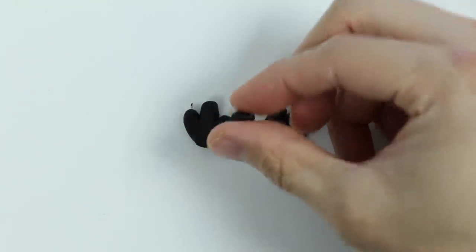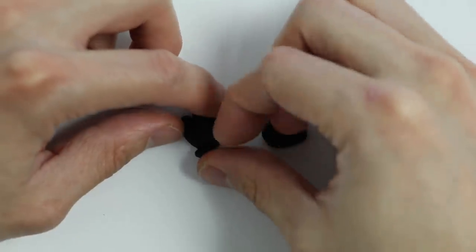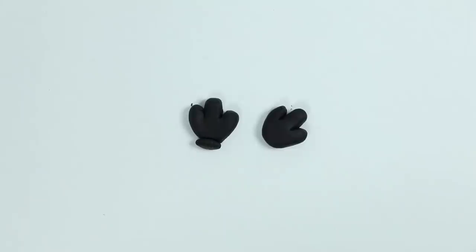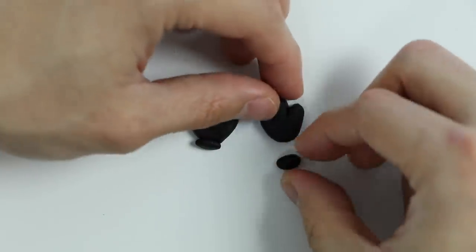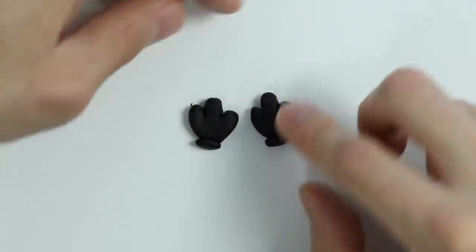Now let's use more black Play-Doh to add a little more detail. Here's the wrist area. Do the same for the other hand. Perfect!